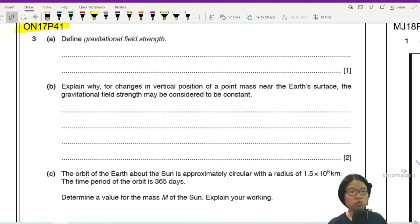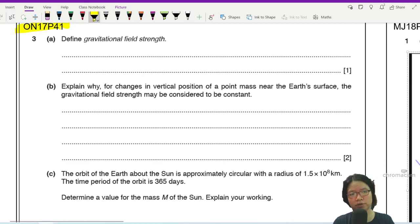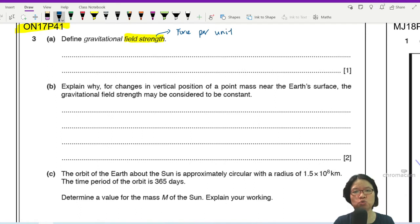In this question, we are going to look at the gravitational field strength of Earth. So it starts off by asking us to define gravitational field strength. Whenever you see the word field strength, it's not the same definition as gravitational field. Whenever it's field strength, it's always force per unit something. Gravity, it will be force per unit mass.